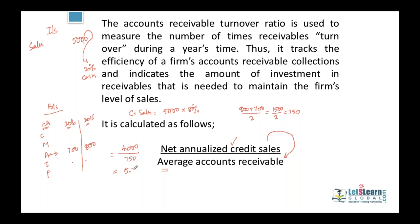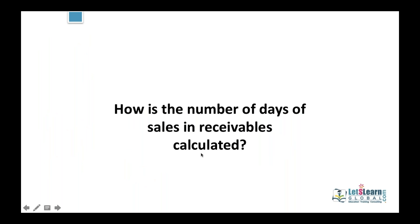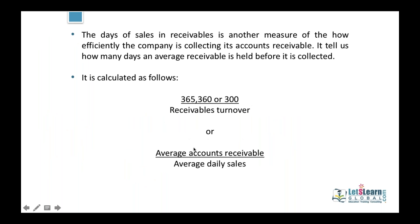So accounts receivable turnover ratio equals 4 million credit sales divided by 750,000 average accounts receivable, giving 5.33 times. This means we are collecting money 5.33 times each year. Converting to number of days: number of days sales in receivables equals 360 divided by accounts receivable turnover ratio of 5.333, which gives 67.5 days — approximately 68 days.